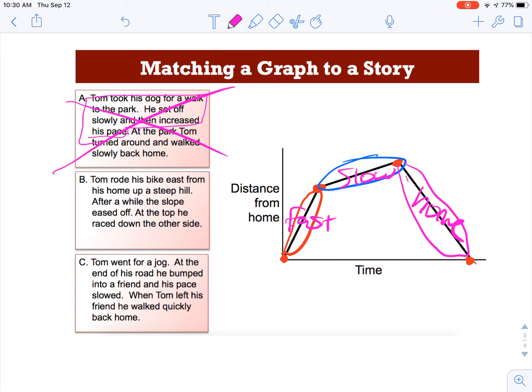B says Tom rode his bike east from his home, up a steep hill. After a while, the slope eased off. At the top, he raced down to the other side. So he rode his bike from home, up a steep hill. And after a while, the slope eased off. Well, if it starts off steep, and it's difficult up the hill, I know that's what this graph looks like, but think about it. If you're going up a hill, you're going to go slower. So he would have started slow, and then when the slope eased off, meaning it wasn't so steep, the hill he was going up, he'd probably go faster. So again, I disagree. This is kind of implying he went slow than fast, where the graph says fast than slow.